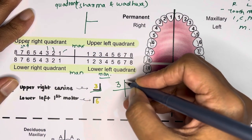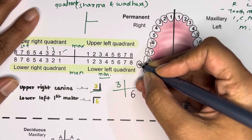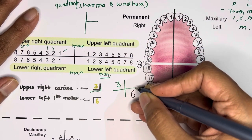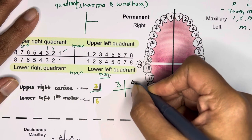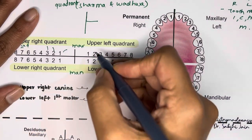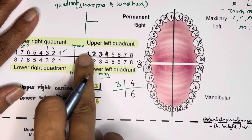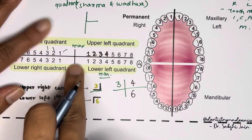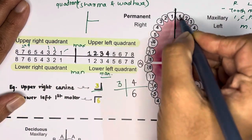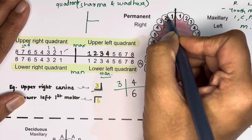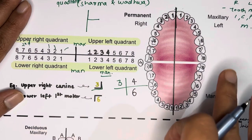For example, the first premolar of the upper left quadrant is tooth number 4. Upper left, written on paper, appears on the right side — so this four goes in that position. When writing which teeth are present, always start from the midline: 1, 2, 3, 4, and so on. Never write it as 8, 7, 6 — always start from one. Always identify where your midline is first, then write the adjacent teeth outward to ensure accuracy.